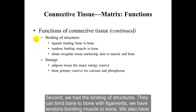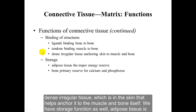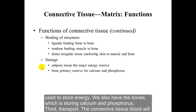We have the bonding of structures: ligaments bind bone to bone, tendons bind muscle to bone, and dense irregular tissue in the skin helps anchor it to the muscle and bone. We also have storage: adipose tissue stores energy, and bones store calcium and phosphorus.